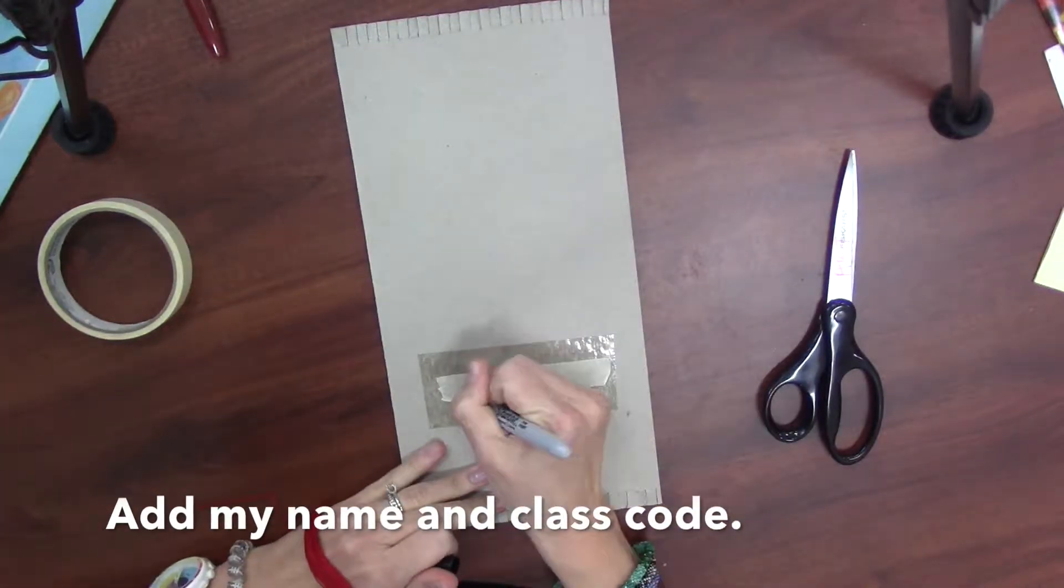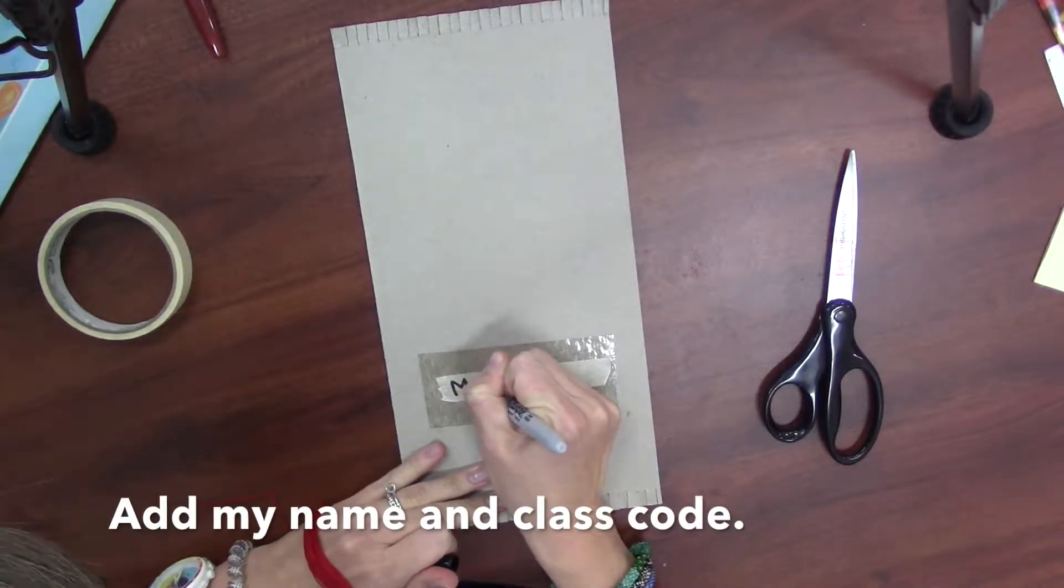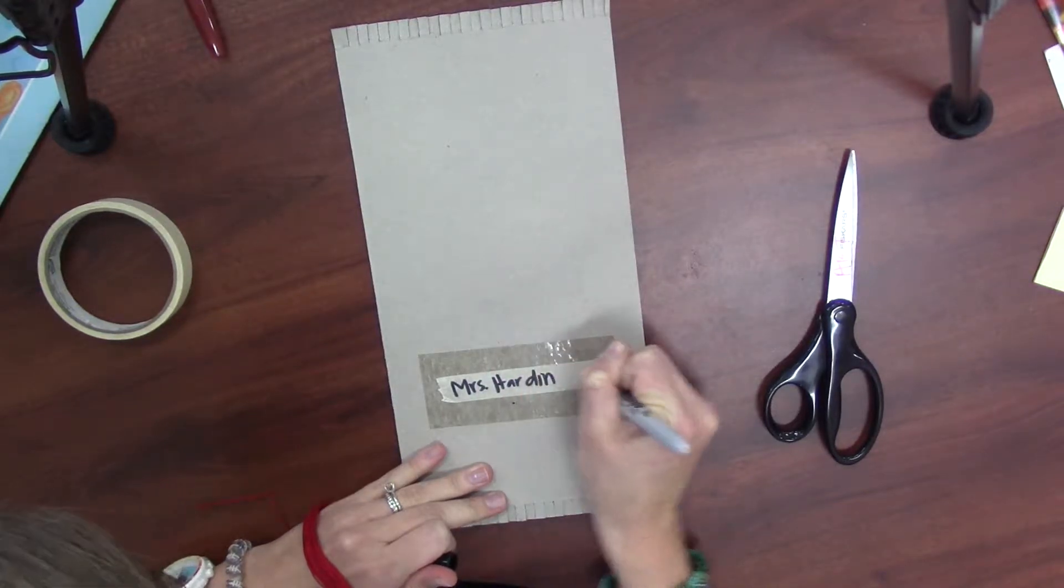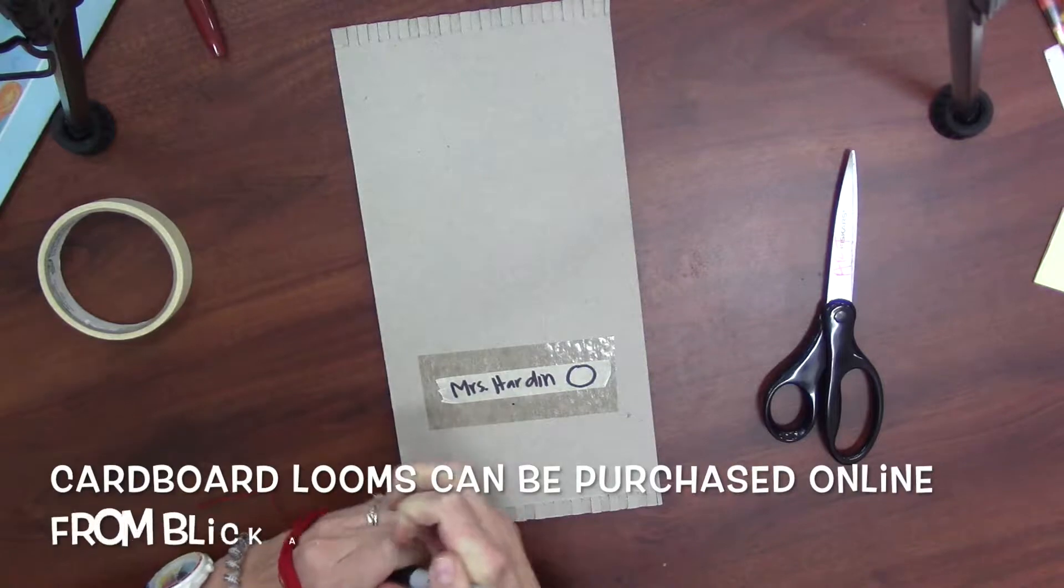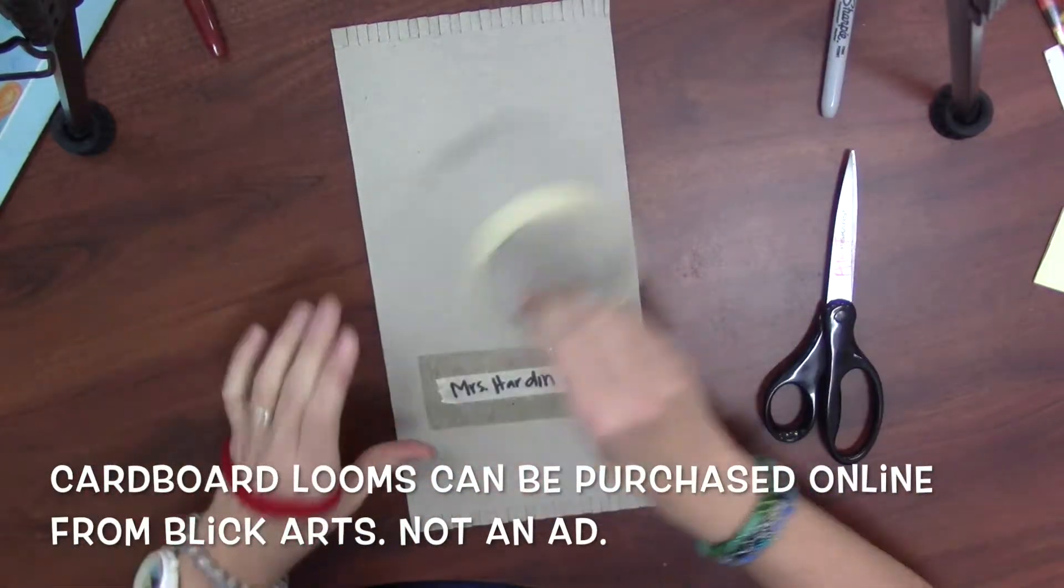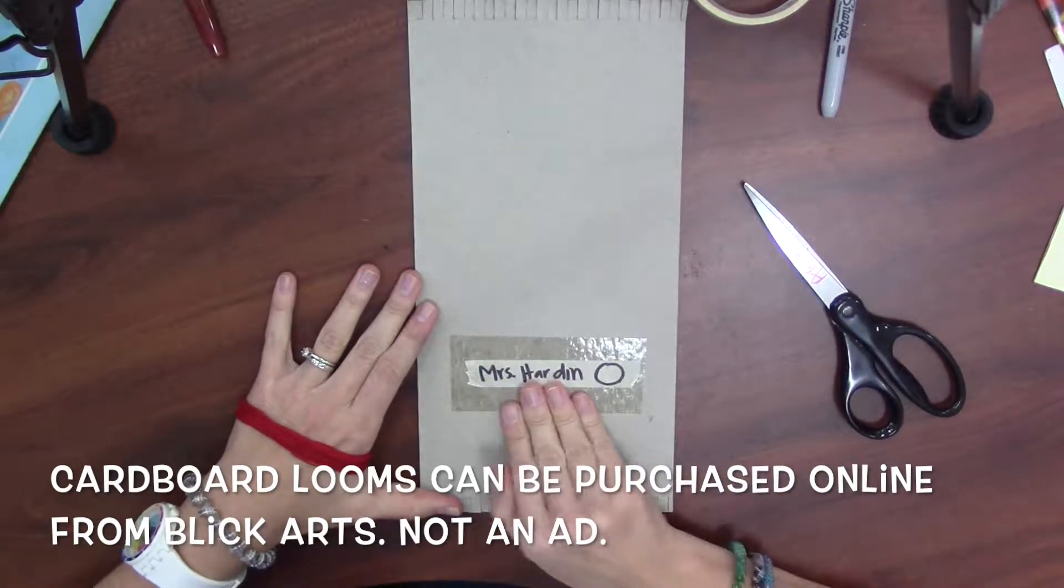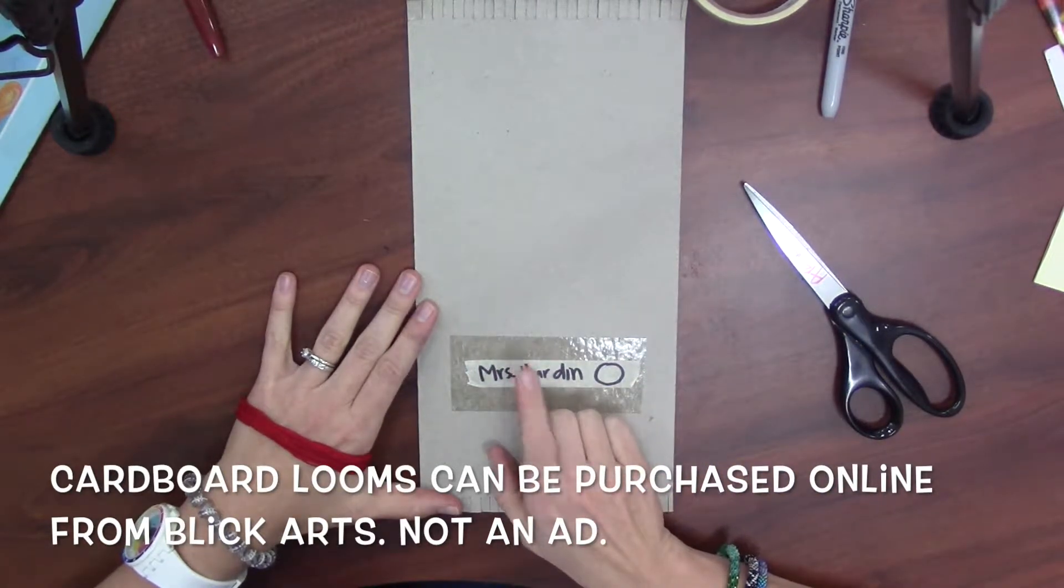I'll take a sharpie and write my name and my class code. Now I'm done with the sharpie. I'm done with the masking tape. Now I have my loom and this is the back of my loom. My name stays on the back.